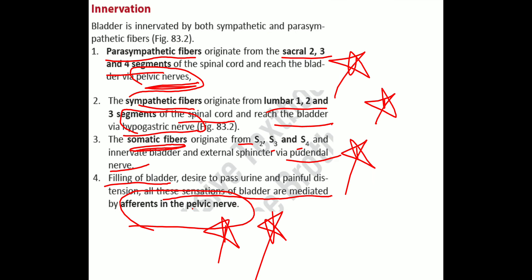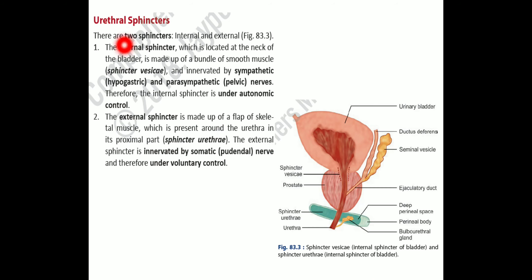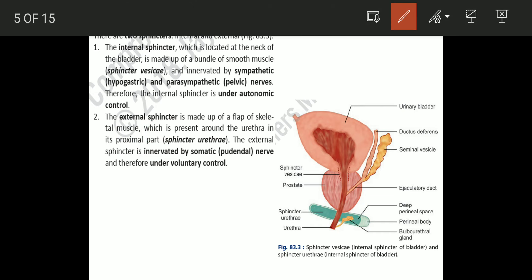There are two urethral sphincters: the internal sphincter and the external sphincter. The internal sphincter is located at the neck of the bladder, made up of smooth muscle called the sphincter vesicae, which is regulated by sympathetic (hypogastric) and parasympathetic (pelvic) nerves — under autonomic nervous system control.